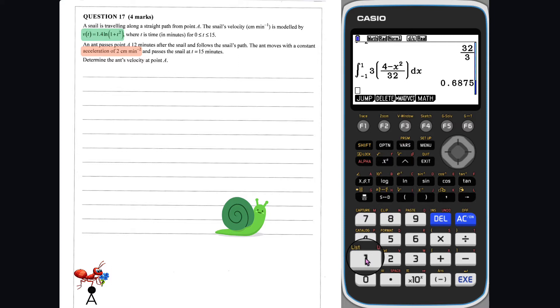But first, we will determine the distance travelled by the snail in 15 minutes. Given that the distance travelled can be found by integrating the velocity function.